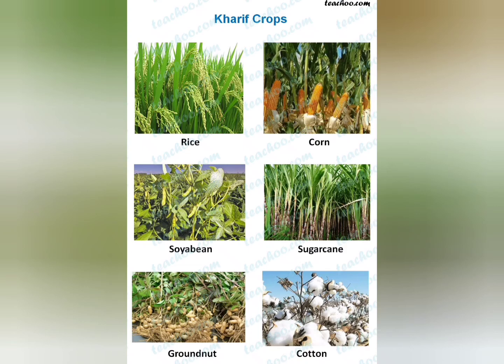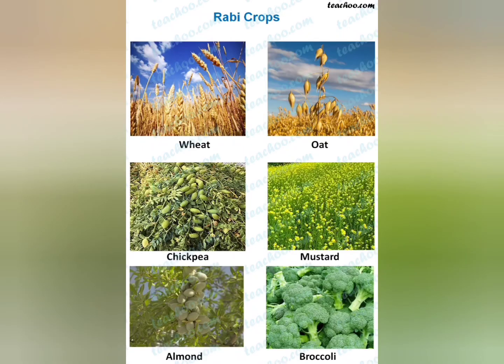Now we will move on to the next type: Rabi crop. These are sown in the winter season starting from the month of October and harvested around April. Examples include wheat, gram, peas, mustard, linseed, oilseed, and barley. So this is the introduction.